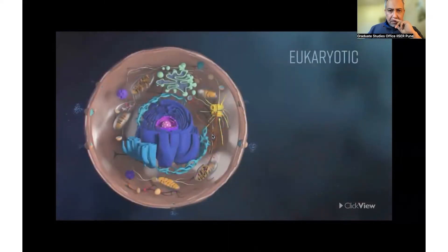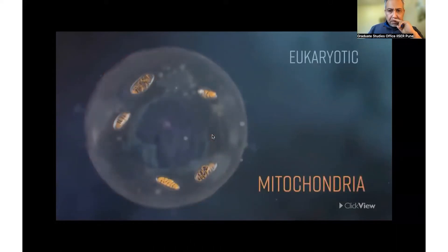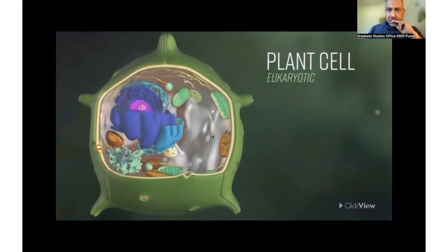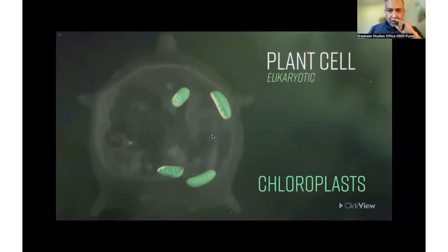Eukaryotic cells also have other large, complex, membrane-bound organelles, which prokaryotic cells lack. These include mitochondria, rough and smooth endoplasmic reticulum, the Golgi complex, and in the case of plant cells, chloroplasts.